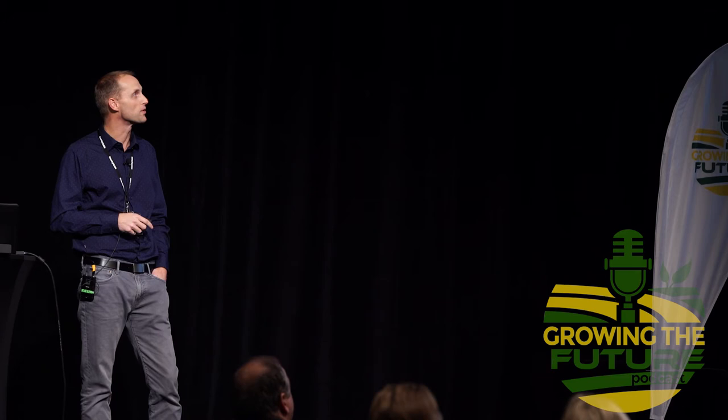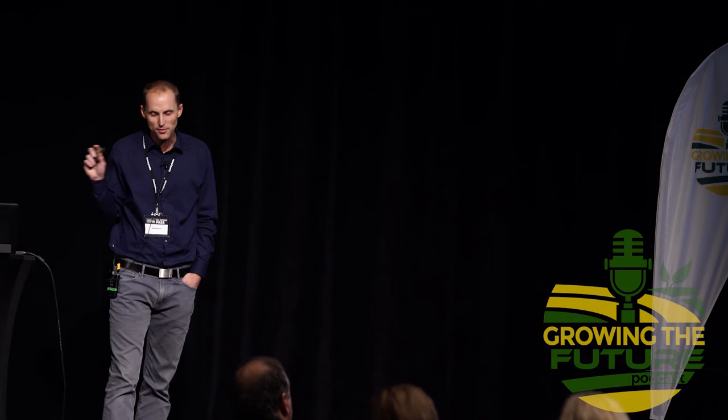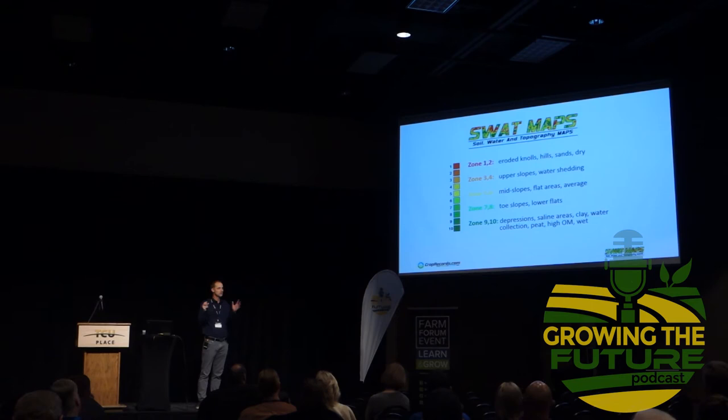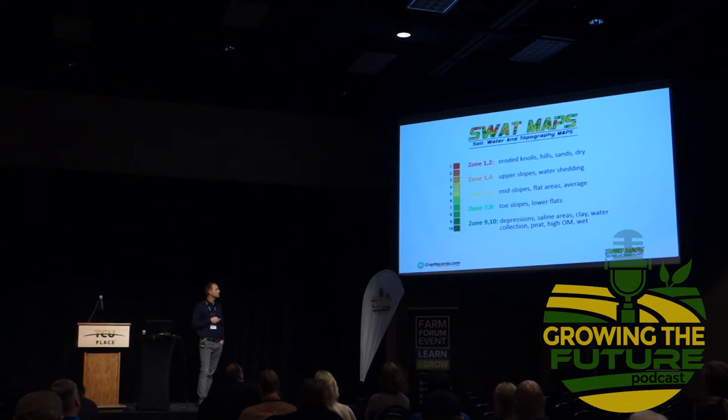Just for context, here's what the different zones typically are — every field is different, every area is different. But if you think about it in the context of water, that's the best way. Typically, zone 1 is a dry knoll — if there's sand, it's usually a sandy knoll — and those zone 10s are often wet or saline depressions.